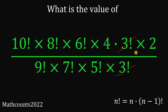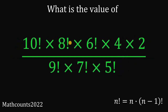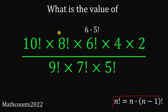This simplifies to 10 factorial times 8 factorial times 6 factorial times 4 times 2, all over 9 factorial times 7 factorial times 5 factorial. Now, using this identity again: 6 factorial can be written as 6 times 5 factorial, 8 factorial can be written as 8 multiplied by 7 factorial, and 10 factorial can be written as 10 times 9 factorial.